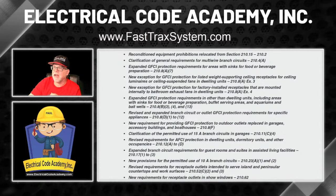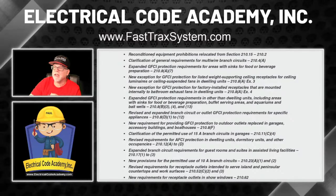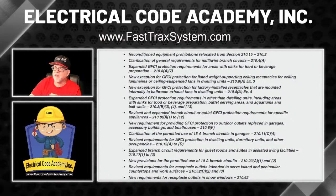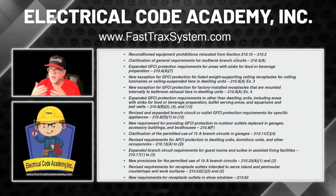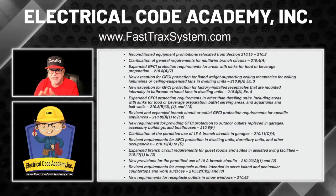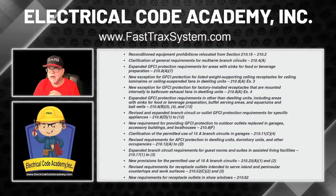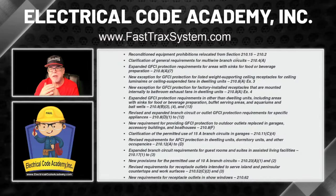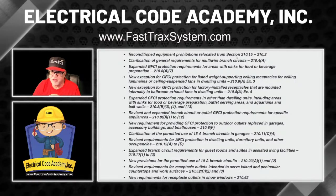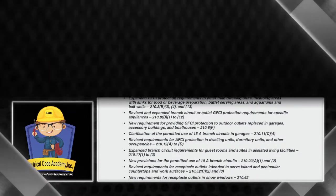The first change is that reconditioned equipment prohibitions have been relocated from Section 210.15 and have now been moved to 210.2. If you remember, the .2 was used in different articles for specific definitions germane to that article — that's all been moved to Article 100, as covered in part one. That frees up the .2 in many locations. So here, the reconditioned equipment prohibitions within 210 have been relocated. Let's go to the code and look at what that looks like.